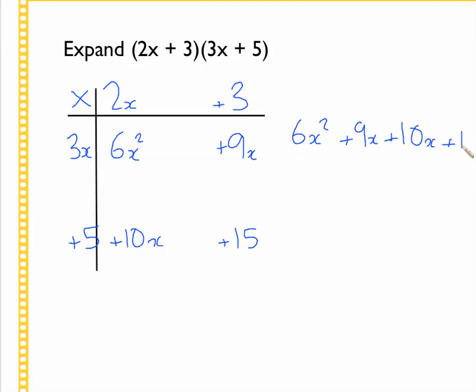And then we combine these like terms, the ones that are on the diagonal, so we end up with six x squared. We have nine x and we add ten to them, and then we're left with plus nineteen x plus fifteen. And that is the answer to this one.